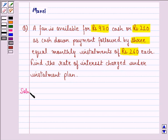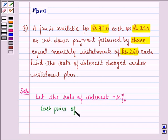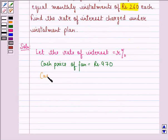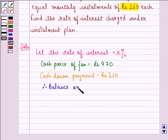Let us start with the solution. Let the rate of interest be x%. Cash price of the fan is Rs. 970. Cash down payment is Rs. 210. Therefore, the balance amount is equal to Rs. 970 minus Rs. 210, that is Rs. 760.